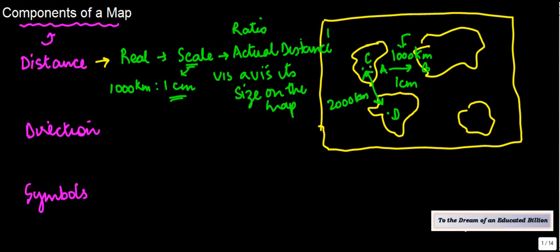Then if I measure this on the map, it should actually be two centimeters. Why? Because on the map, every 1000 kilometers is represented by one centimeter. So this precision has to be there; otherwise, it will become difficult to find the real distance between two places using the map.